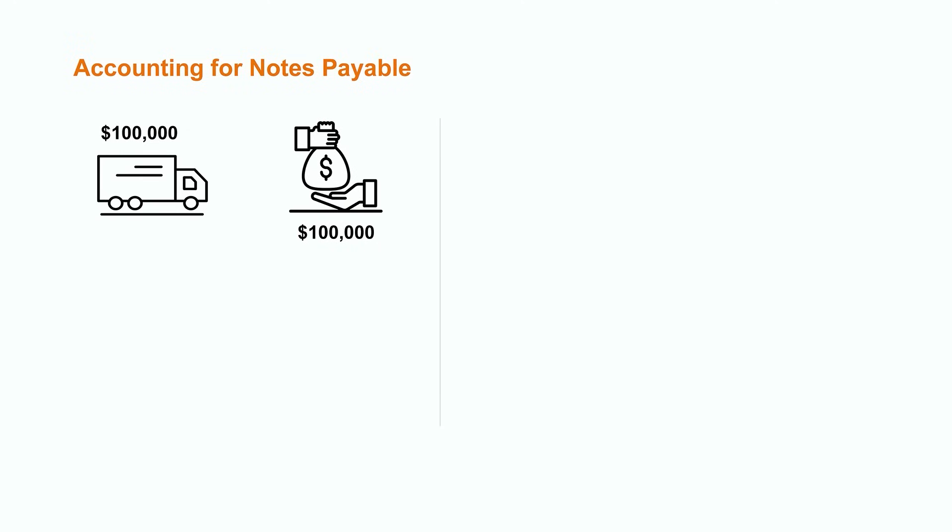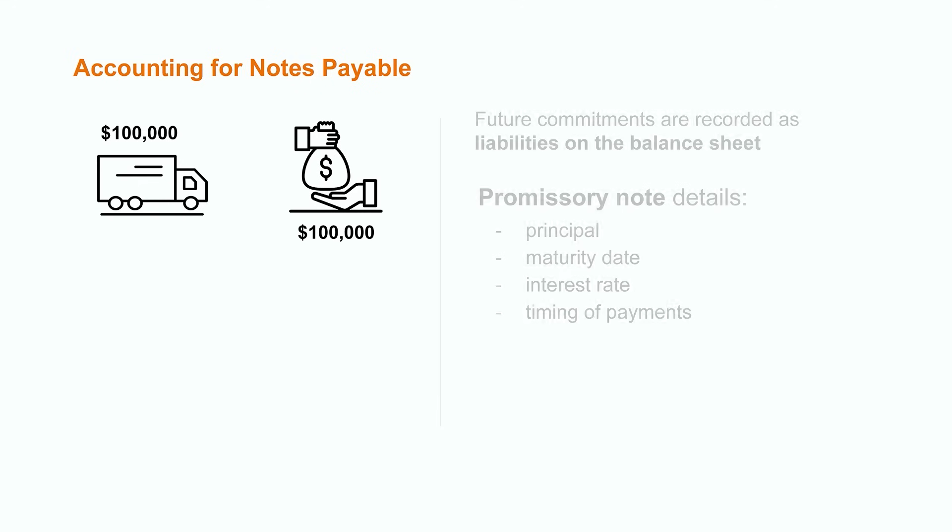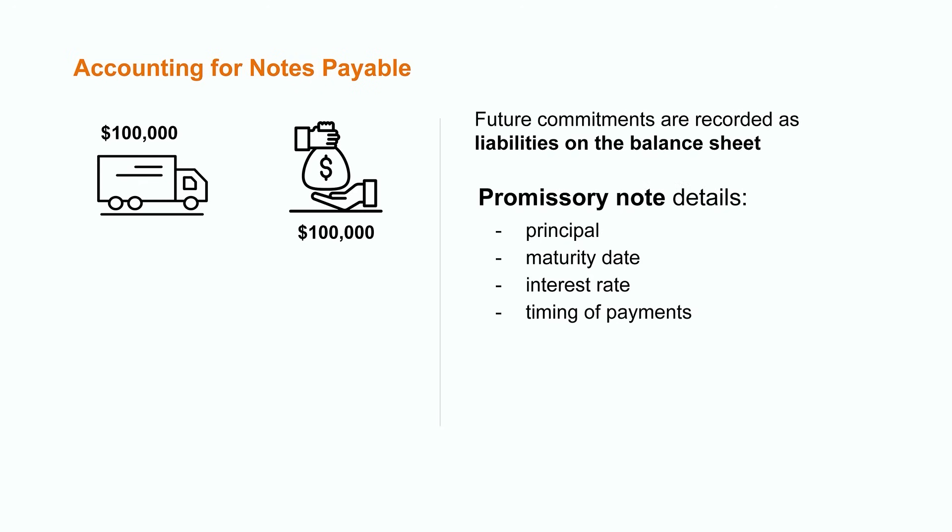Consider a company that is looking to purchase a new delivery truck for $100,000. If they don't have the cash readily available, they'll likely consider taking on debt to make the purchase. After considering their options, the CFO of the company decides to borrow the $100,000 from the bank. The bank agrees to lend the money by asking the company to sign a contract or promissory note, which would include details around the maturity date, interest, and timing of payments.